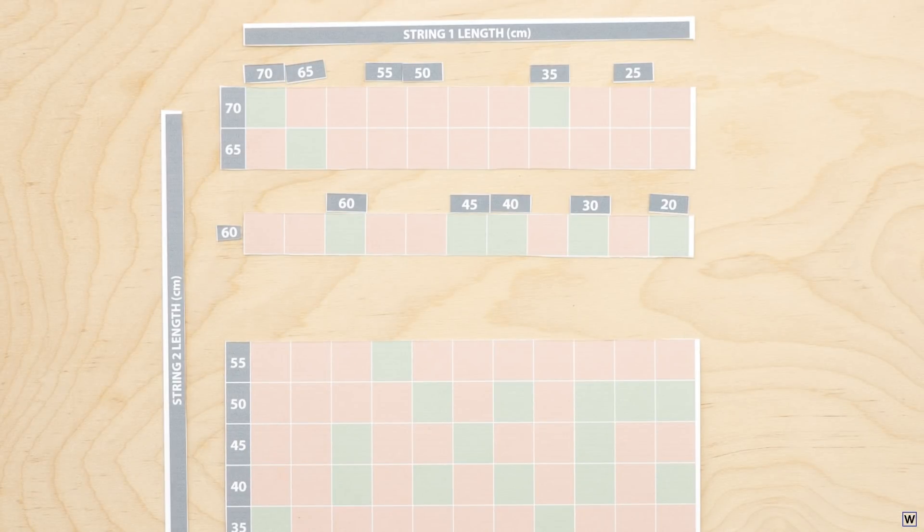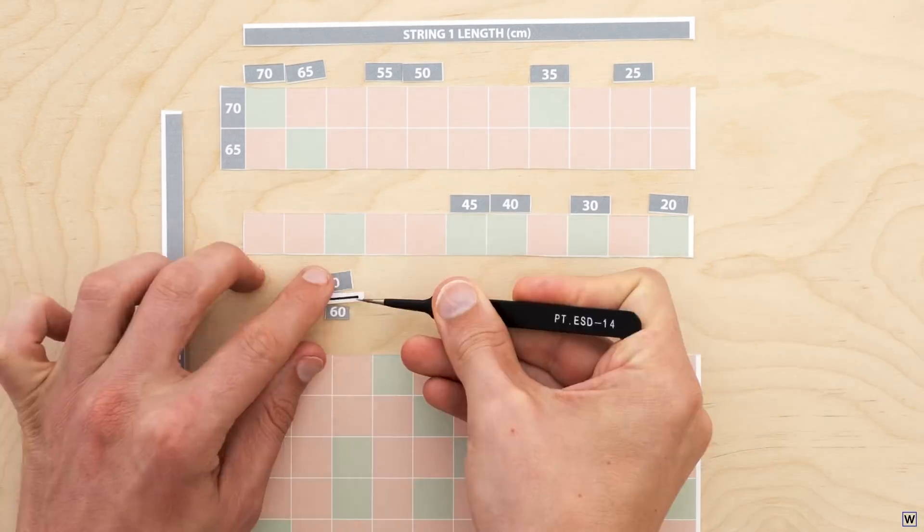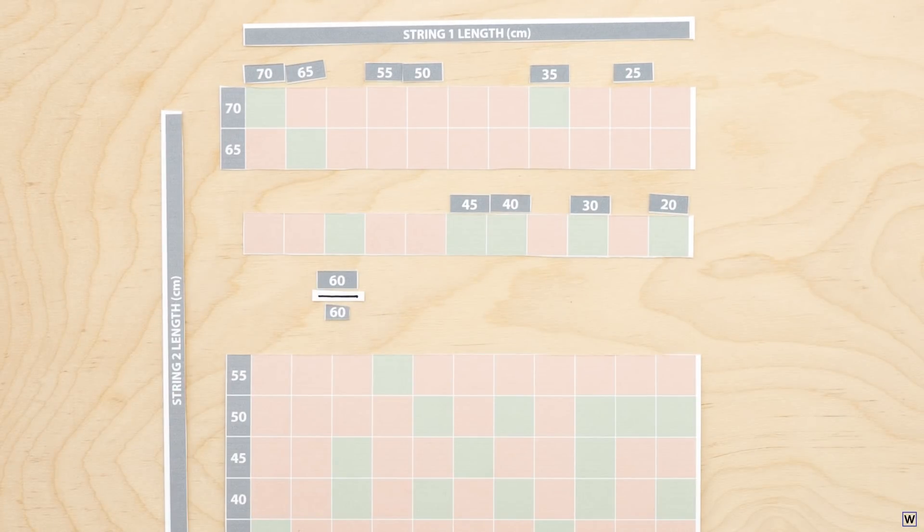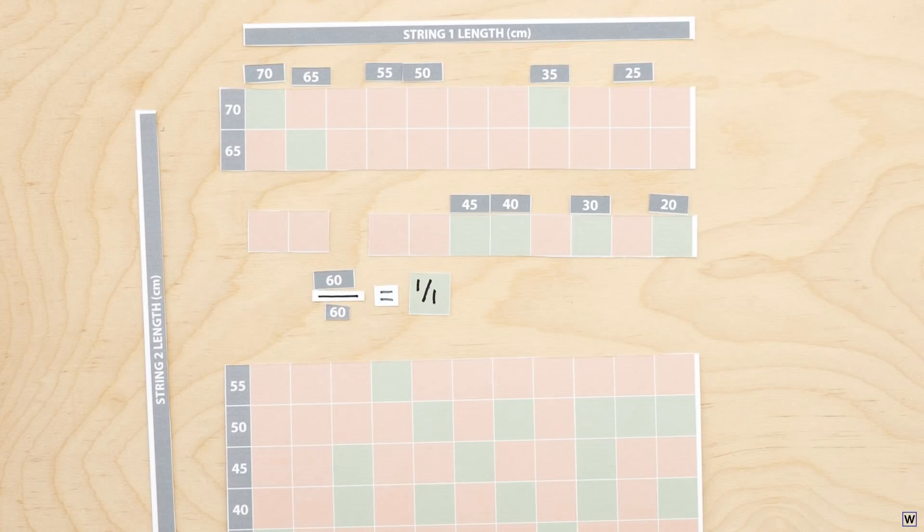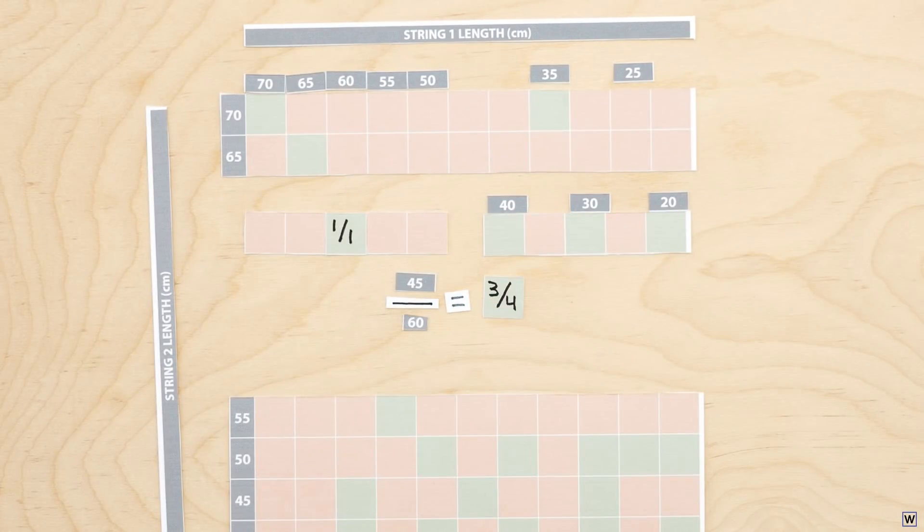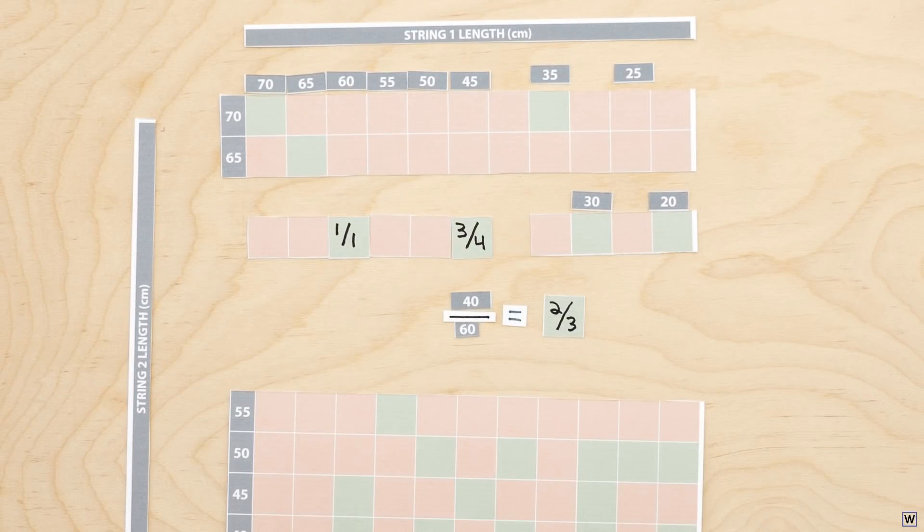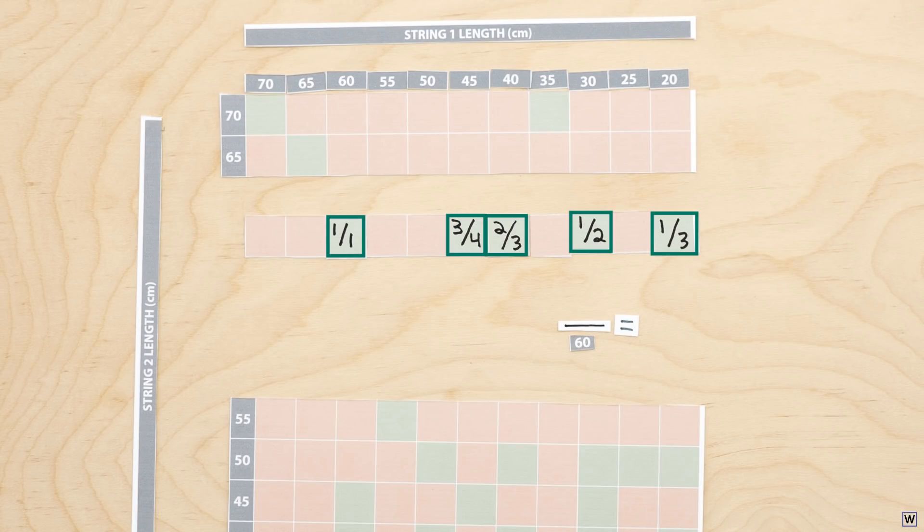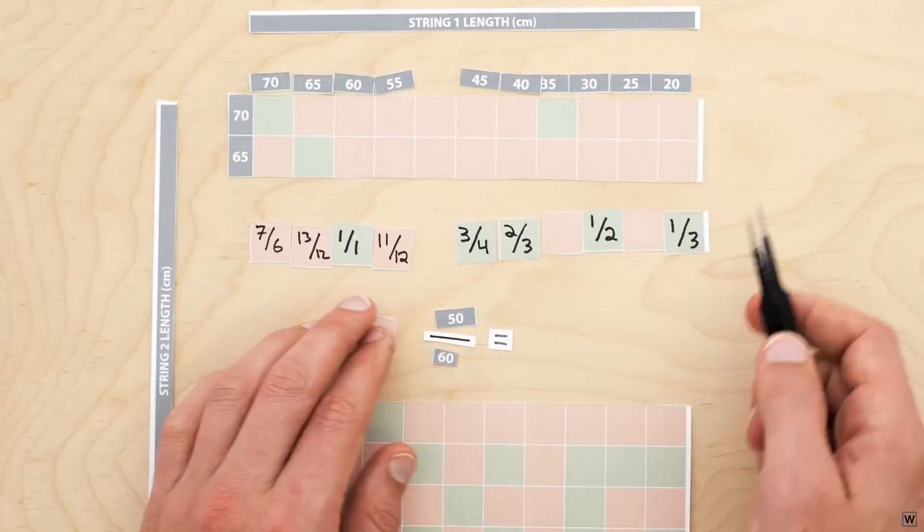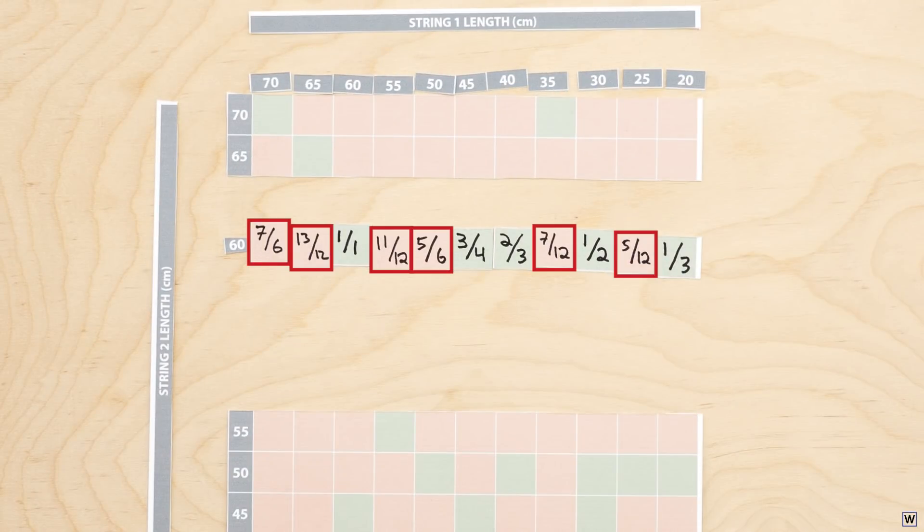Now what do these numbers have in common? Well if we divide the length of our first string by the length of our second string, we see that the strings that sound good together do have something interesting in common. The ratios of their lengths all reduce to simple fractions, while the ratios of the lengths of strings that do not sound good together do not reduce to simple fractions.